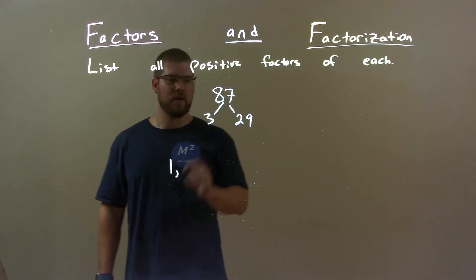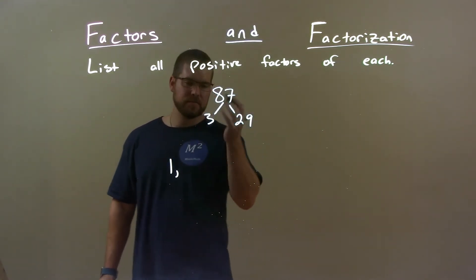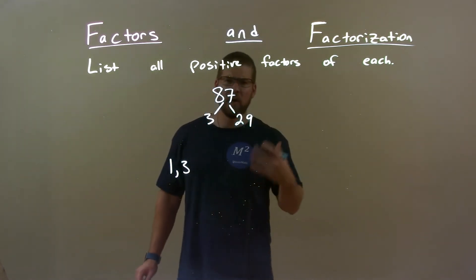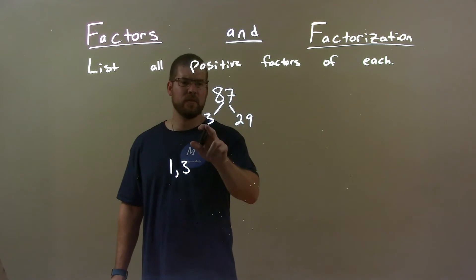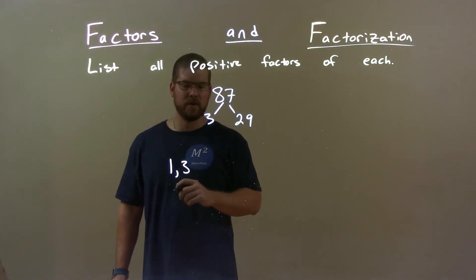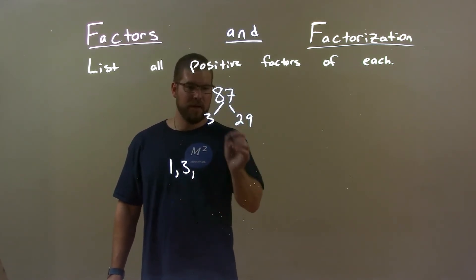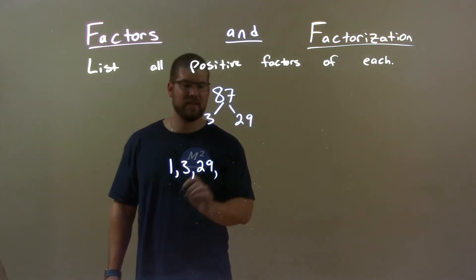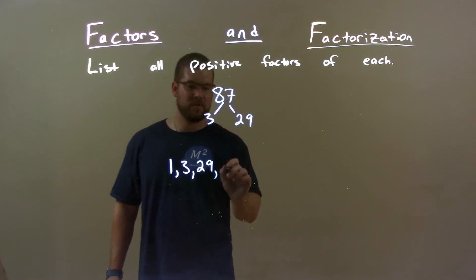1 will always go into the number itself. Then, since this number is odd, 2 won't work. Okay, so then we have 3. Now, all of our positive factors should be able to be multiplied by the prime numbers here. Since 3 times 29 already gave me 87, 29 is the next number, and our last number is the number itself.